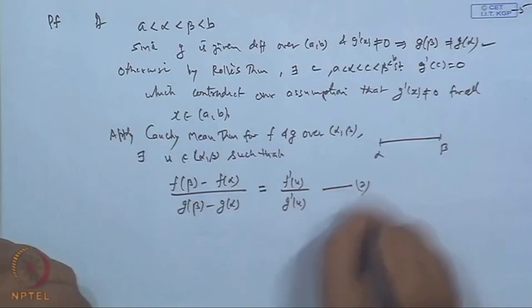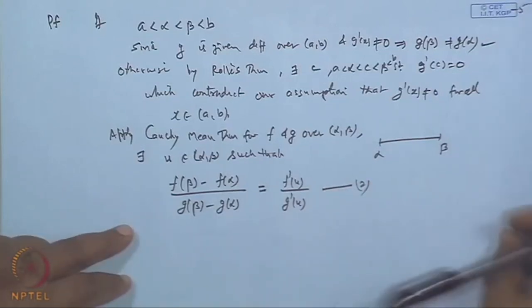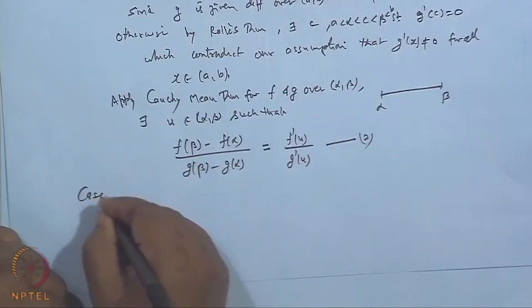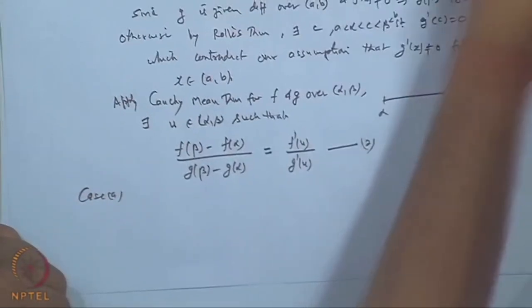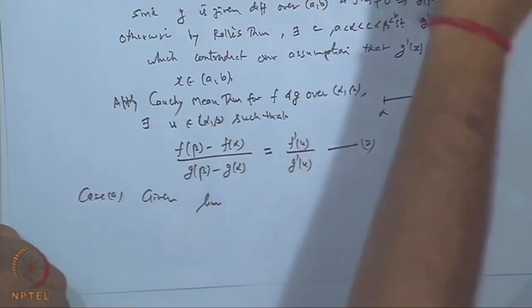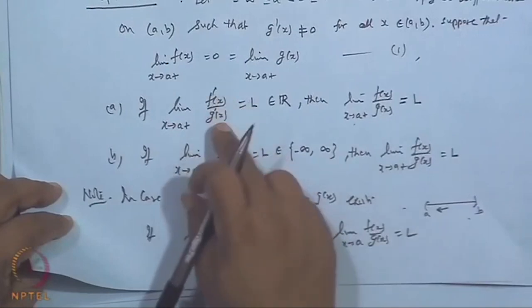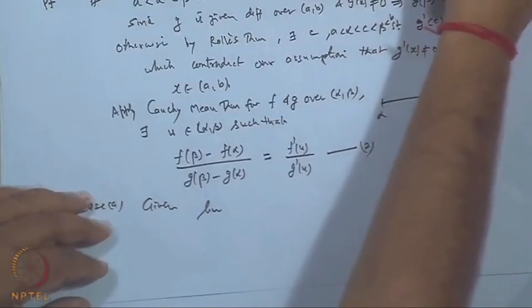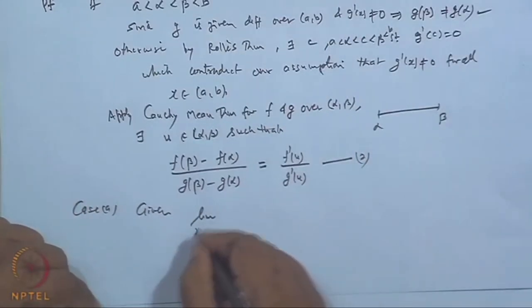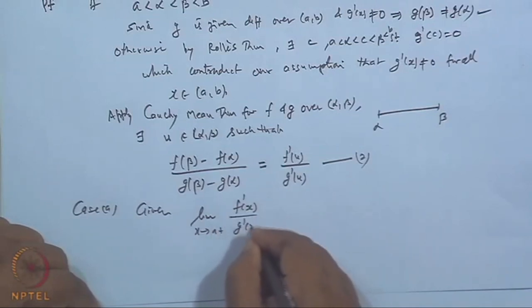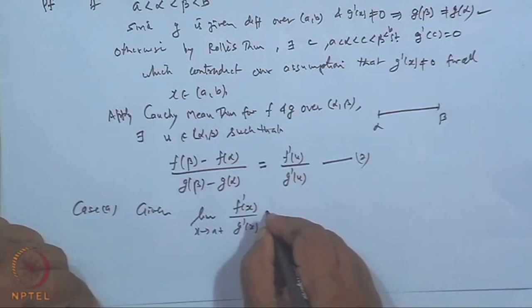Now apply the Cauchy Mean Value Theorem to f and g on [α, β]. By the MVT, there exists u in (α, β) such that [f(β) − f(α)] / [g(β) − g(α)] = f'(u)/g'(u). Let this be equation (2).